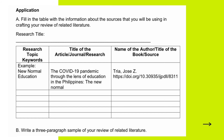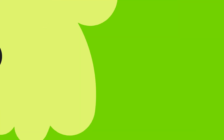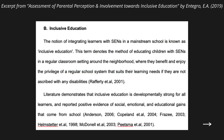In Part B, you have to write a three-paragraph sample of your review of related literature. Here is a sample RRL from my paper entitled 'Assessment of Parental Perception and Involvement Towards Inclusive Education,' which I wrote in 2019. I have keywords and variables which are parental perception, parental involvement, and inclusive education.